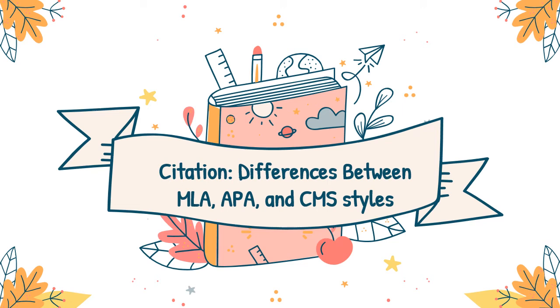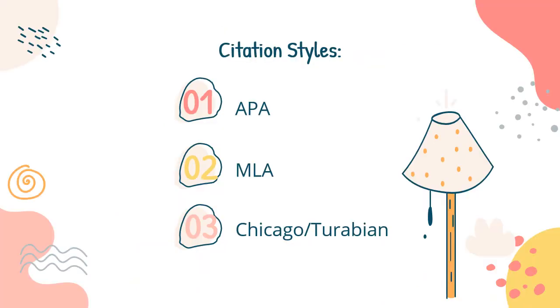Differences between MLA, APA, and CMS styles. In this video, we define the most commonly used citation styles. There are three citation styles that we are going to discuss: APA, MLA, and Chicago Turabian.